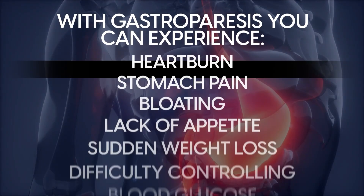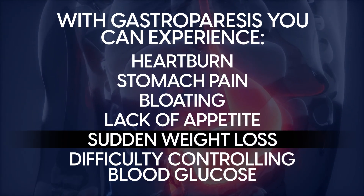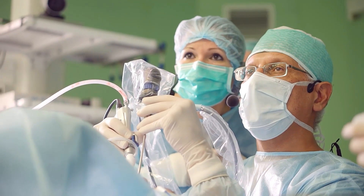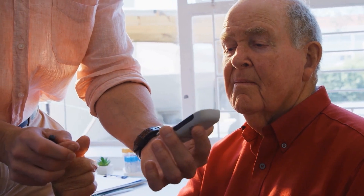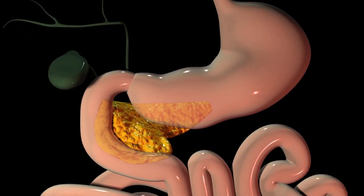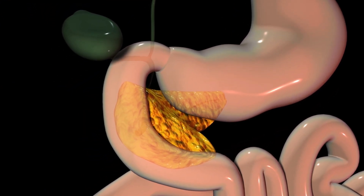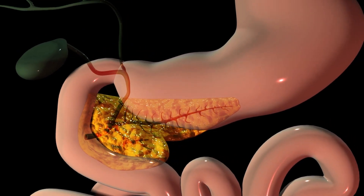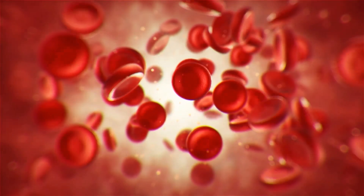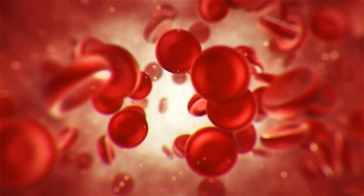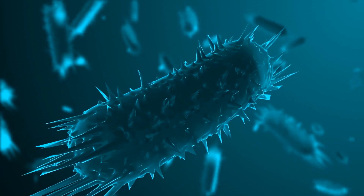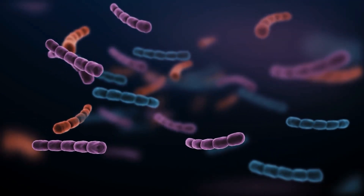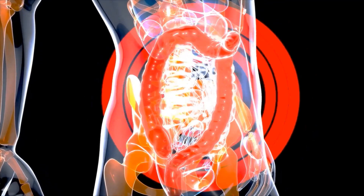With gastroparesis, you can experience heartburn, stomach pain, bloating, lack of appetite, sudden weight loss, and difficulty controlling blood glucose. Studies point out that gastroparesis is more common in people with type 1 diabetes. This is likely because type 1 diabetes is considered to be an autoimmune disease, where the immune system mistakenly attacks the healthy tissues of the body and destroys the insulin-producing cells of the pancreas. Without an adequate supply of insulin, cells can't get the energy they need, blood sugar levels rise, and changes in the microorganisms in the gut could lead to alterations in the gut's immune system, which greatly affects gut permeability, causes intestinal inflammation, and increased sensitivity to food allergens.